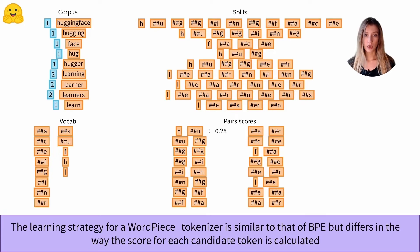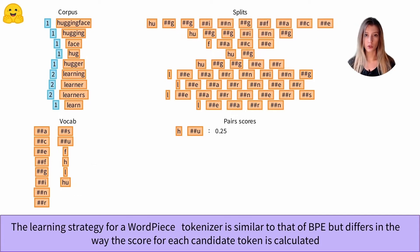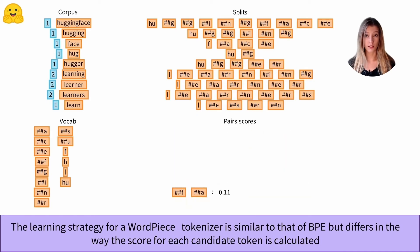Now that we know how to calculate this score, we can do it for all pairs. We can now add to the vocabulary the pair with the highest score, after merging it of course. And now we can apply this same fusion through our split corpus. We just have to repeat the same operations until we have the vocabulary of the desired size.